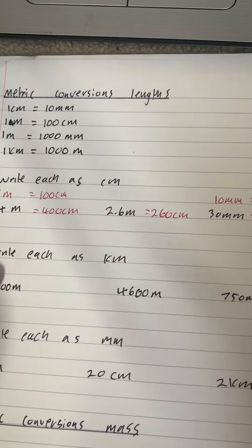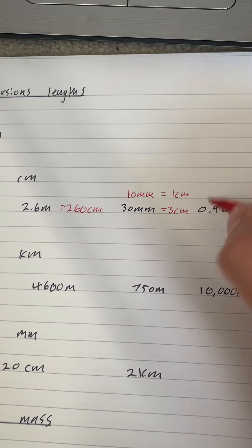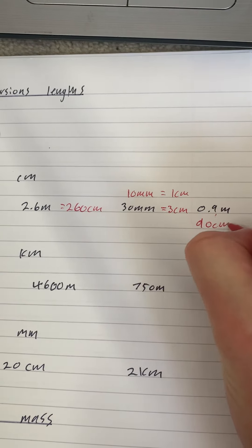Now meters to centimeters, to get from meters to centimeters, we times by 100. So I need to times this one by 100, which gives us 90 centimeters.